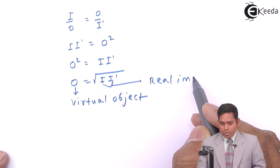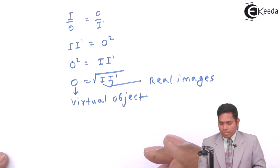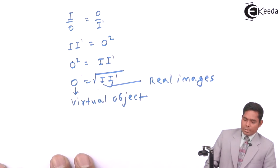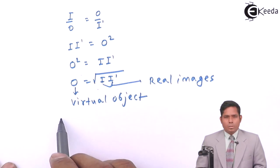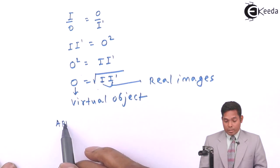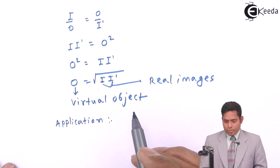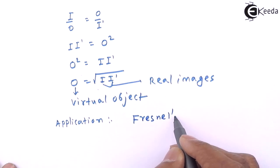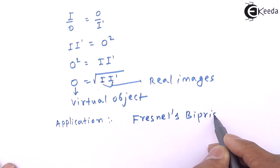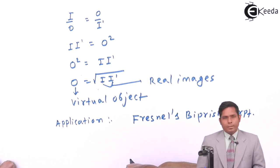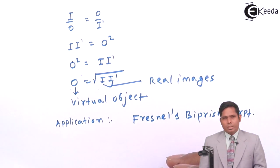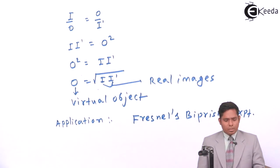These two images I and I' are real images and can be measured using a traveling microscope. The conjugate foci method is applied in Fresnel's biprism experiment to find the size of the virtual object and ultimately determine the wavelength of light used in the interference pattern.